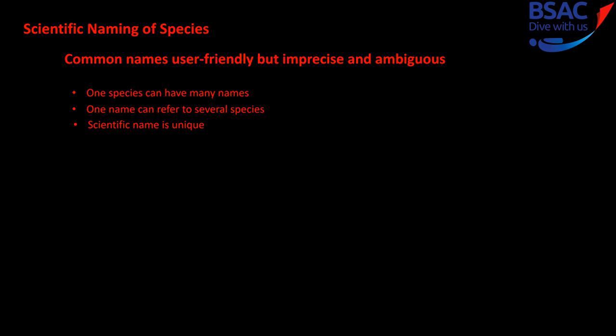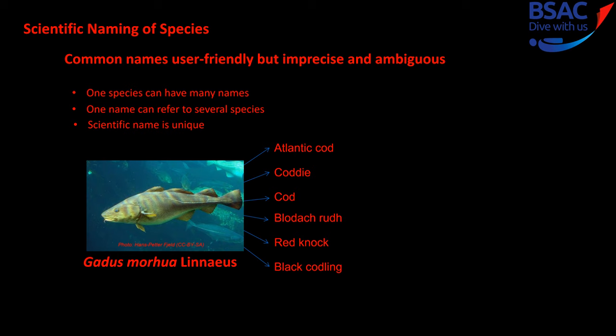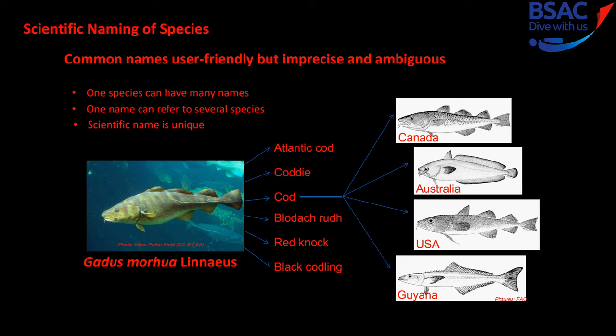Why classify species? I would now like to introduce you to the scientific naming of species. Common names are user friendly but imprecise and ambiguous. One species can have many common names, and one common name can refer to several species. However, scientific names are always unique. This species has a scientific name, Gadus morhua linnaeus, which can have several common names. It can be called the Atlantic cod, codling, bloodach rud, red knock, or black codling. In the UK we refer to this fish simply as cod. However, the name cod is used around the world to refer to different species depending on the country you are in.